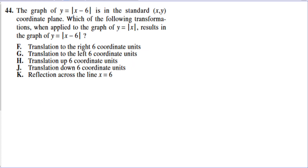Problem 44: The graph of y equals the absolute value of x minus 6 — in the standard XY coordinate plane, which of the following transformations, when applied to the graph of y equals absolute value of x, results in this graph? The ACT primarily talks about reflections and translations. If I start with the absolute value of x as the parent function and add or subtract a number on the outside, like plus five, that causes the graph to go up and down.